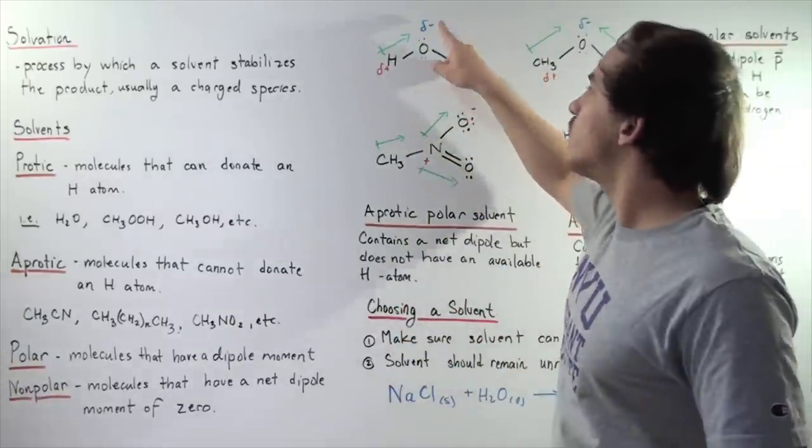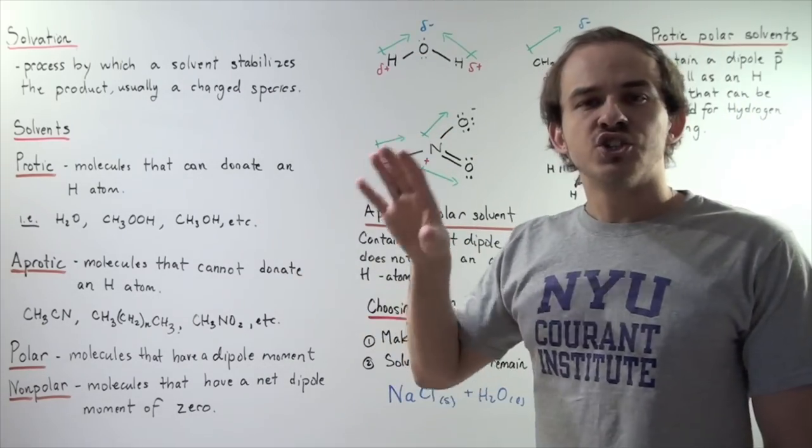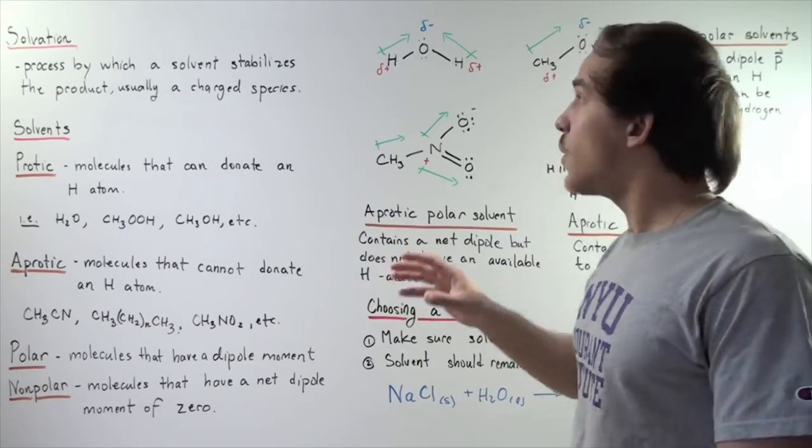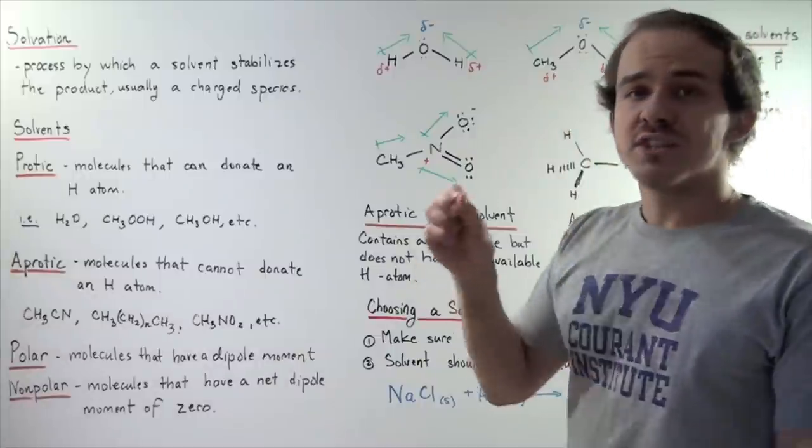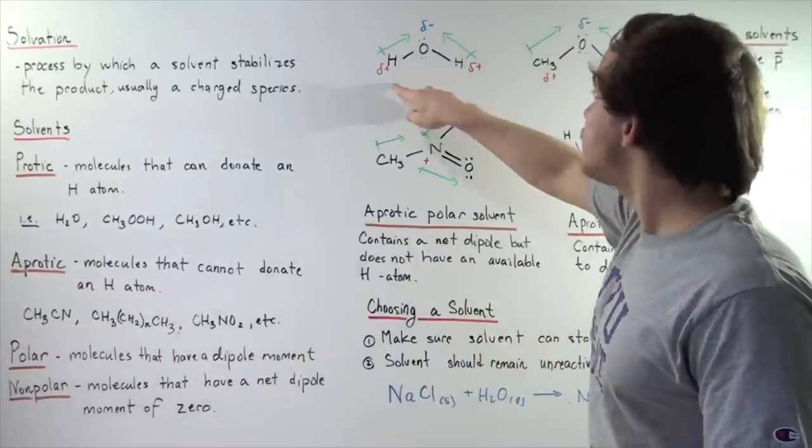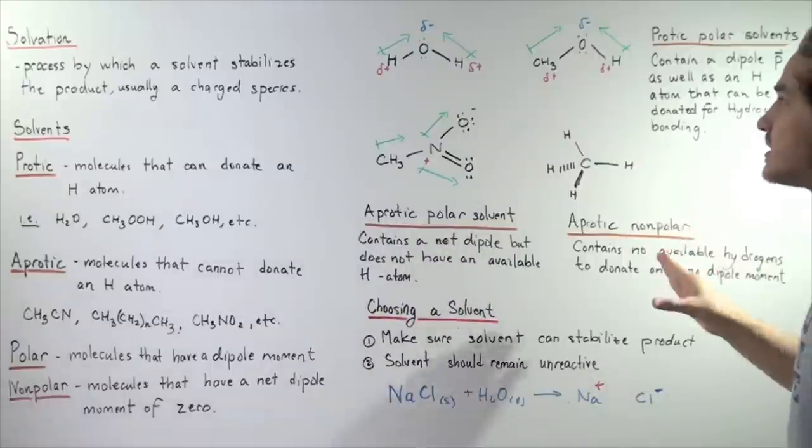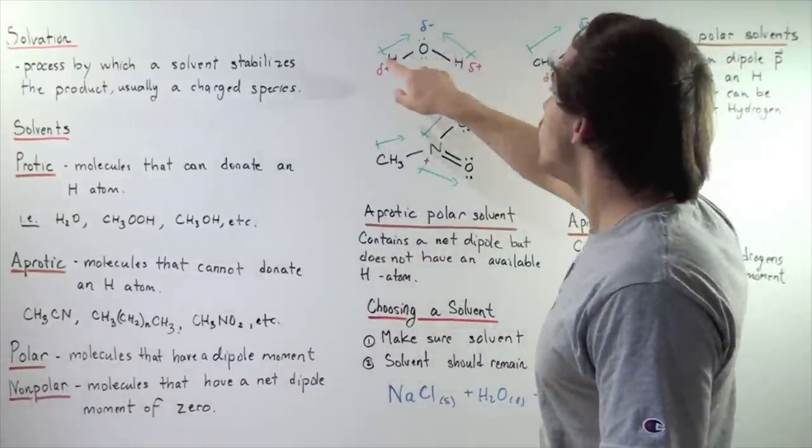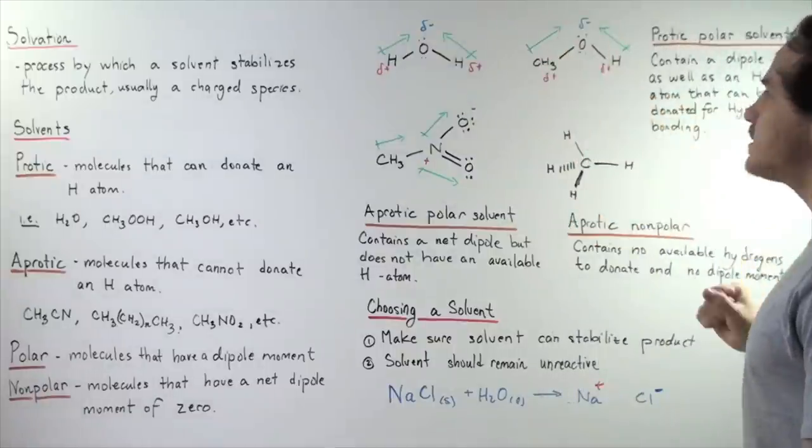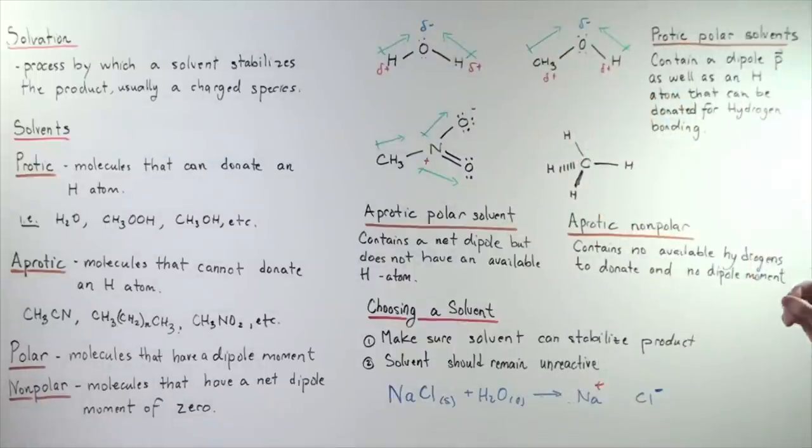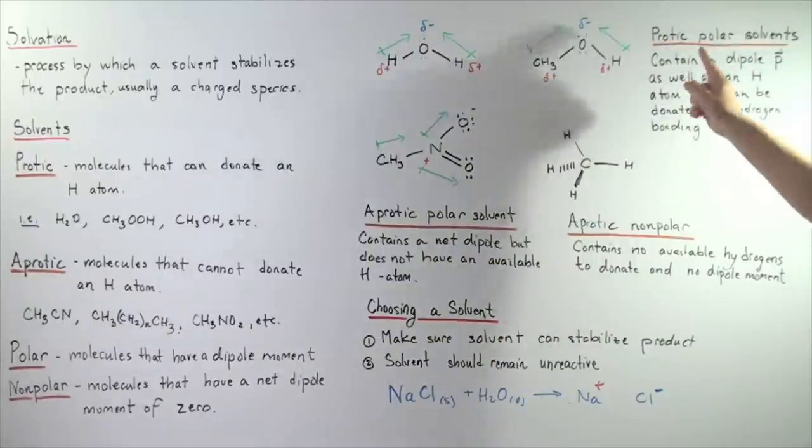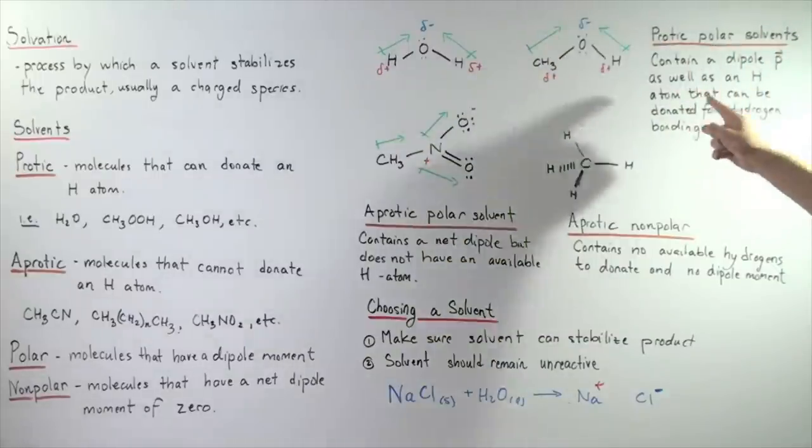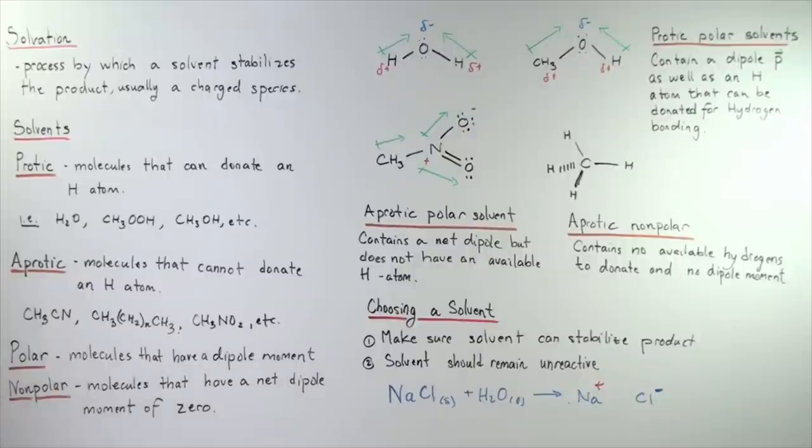And that means our electron density will be closer to our oxygen atoms. And so oxygen will have a partial negative charge, while the H's and the carbons will have a partial positive charge. And so we're going to have a net dipole moment on this molecule as well as this molecule. So, we defined protic polar solvents as solvents that contain a dipole moment as well as an H atom that can be donated for hydrogen bonding.